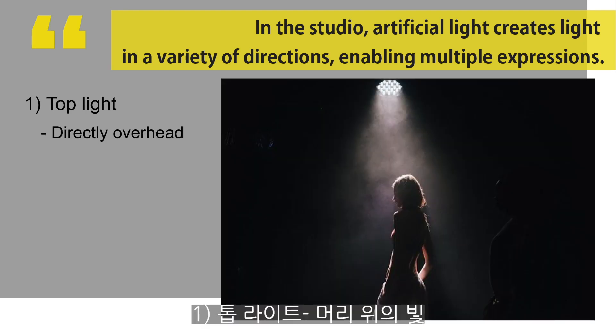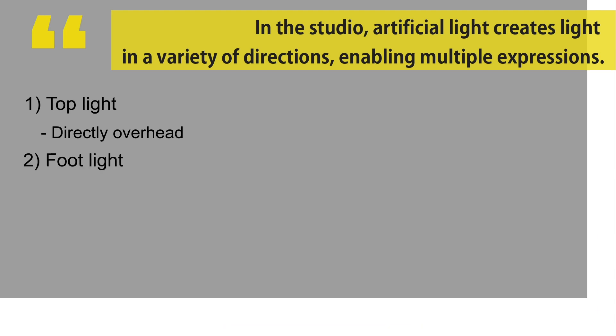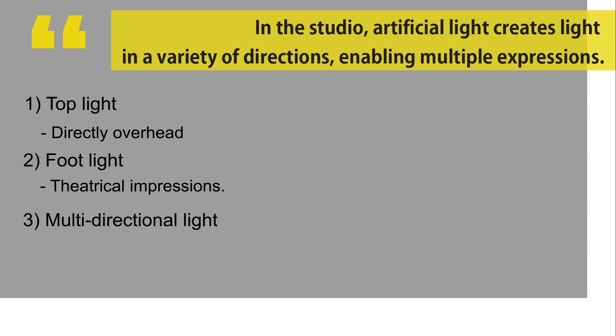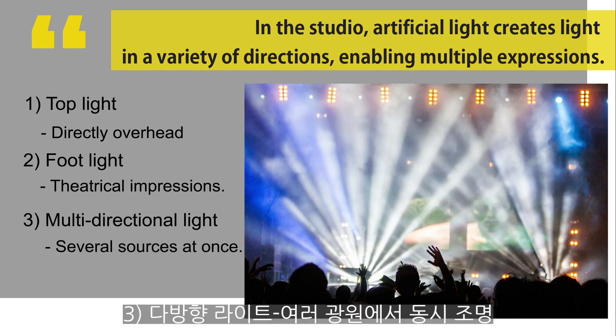Top light is when the light source is directly overhead. Normally this is an undesirable form in portraiture. Foot light comes from below and creates theatrical impressions. Multi-directional light is light from several sources at once, used to capture a particular atmosphere of the scene.